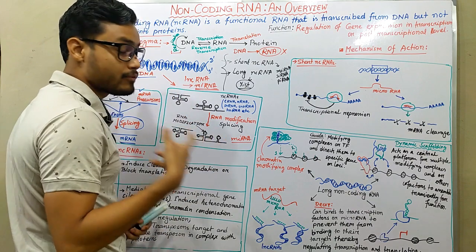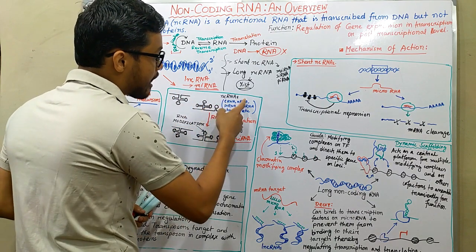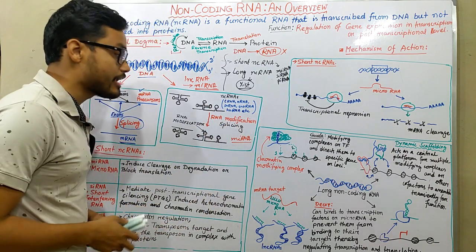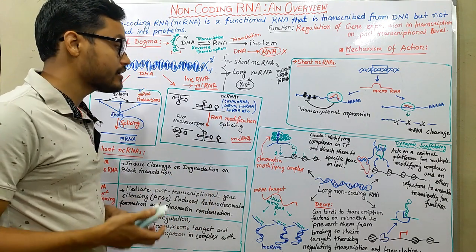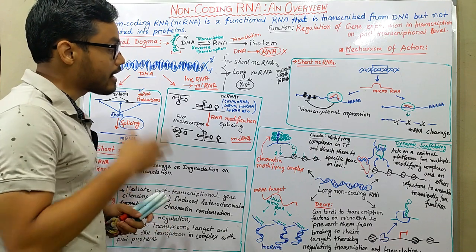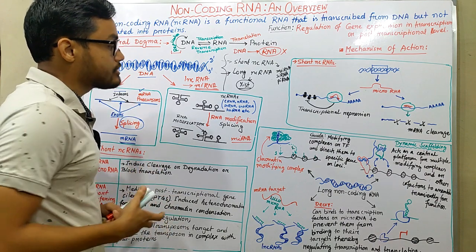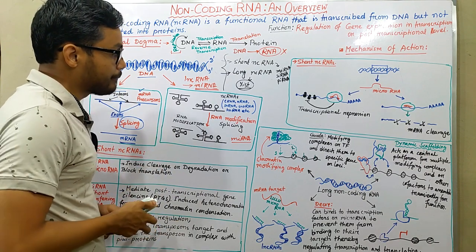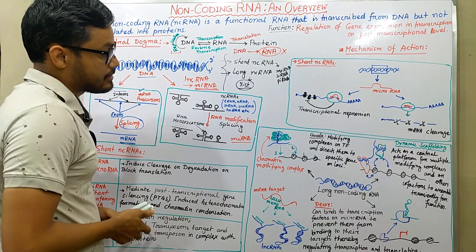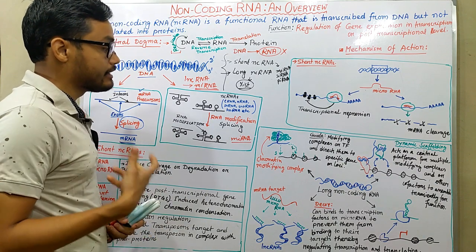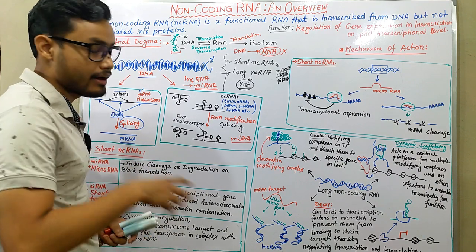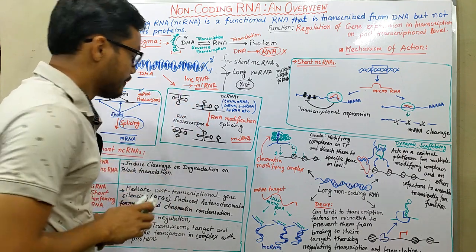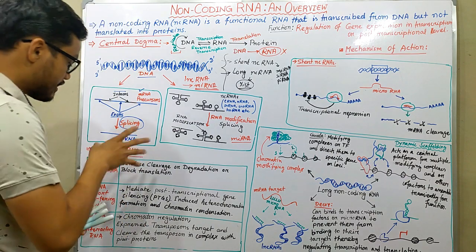Examples of non-coding RNAs include tRNA (transfer RNA), rRNA (ribosomal RNA, which is essential to produce a functional ribosome), snRNA (small nuclear RNA), hnRNA (heterogeneous nuclear RNA), and many more. Many non-coding RNAs have been discovered to date.